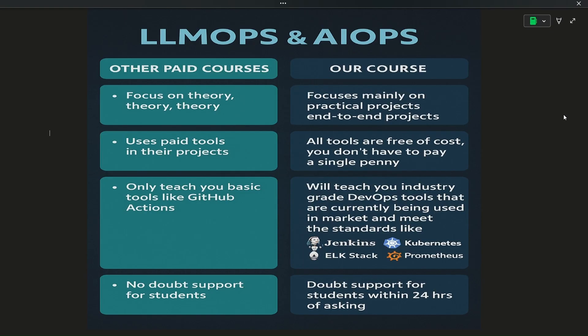So you don't have to spend even a single penny. In other courses they talk about basic stuff — like if you have to do a CI/CD deployment, they talk about how to do it using GitHub Actions. But GitHub Actions is not used in production-grade projects. If you are making a company-level project, you will be using Jenkins. Jenkins is the most famous CI/CD tool, used in over 5,000 big companies.